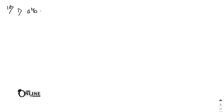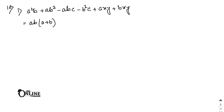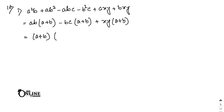Sum 10.1: a²b + ab² - abc - b²c + axy + bxy. Common ab from the first two gives ab(a + b). Common minus bc from the next two gives minus bc(a + b). Common xy from the last two gives xy(a + b). So (a + b) is the common factor, giving (a + b)(ab - bc + xy).